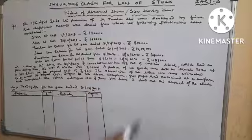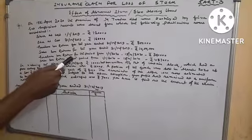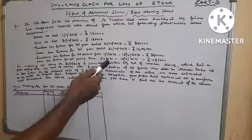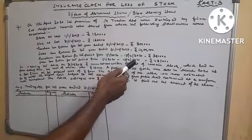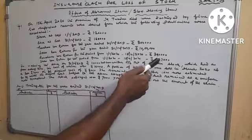Purchase less return for the period from 1-1-2020 to 15-4-2020, Rs. 3,40,000. Sales less return for the period from 1-1-2020 to 15-4-2020, Rs. 4,87,000.